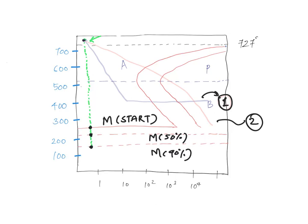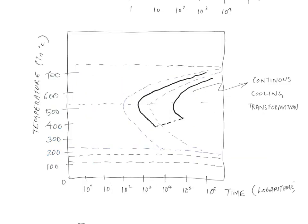So let's have a look at what continuous cooling diagrams are. Here I have shown you a simple continuous cooling diagram. Similar to an isothermal transformation diagram, we have time in the logarithmic scale along the x-axis and temperature in degrees Celsius along the y-axis. The dotted lines represent the isothermal transformation diagram, and these dark lines represent the continuous cooling transformation diagram. You can see that in continuous cooling, the time required for the reaction to begin is delayed — that's why this dark curve is slightly offset from the TTT curve.